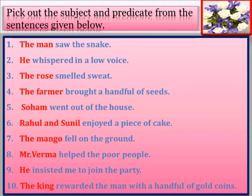The question is: pick out the subject and predicate from the sentences given below. The first sentence is 'The man saw the snake.' In this sentence, 'the man' will be the subject and 'saw the snake' will be the predicate. Second: 'He whispered in a low voice.' Here 'he' will be the subject and 'whispered in a low voice' will be the predicate. Third: 'The rose smelled sweet.' The rose is the subject and 'smelled sweet' is the predicate.